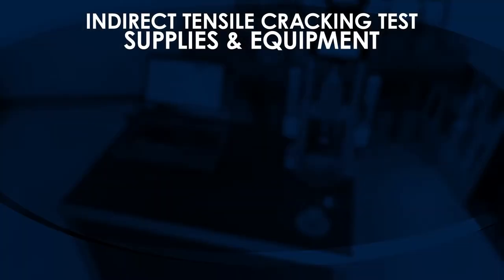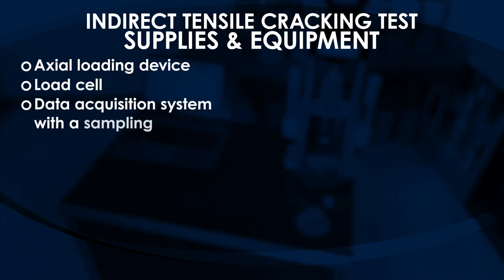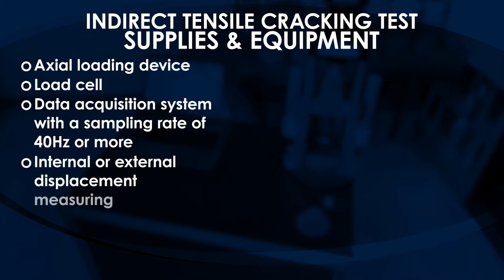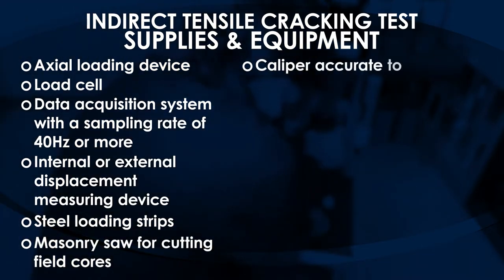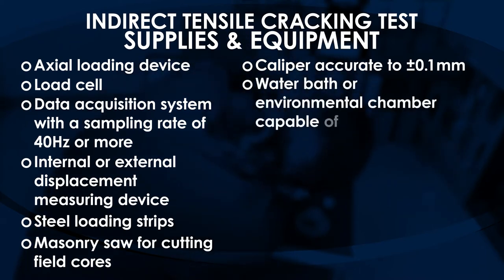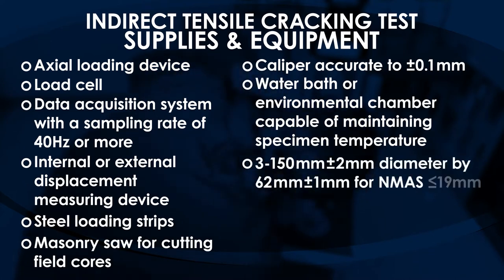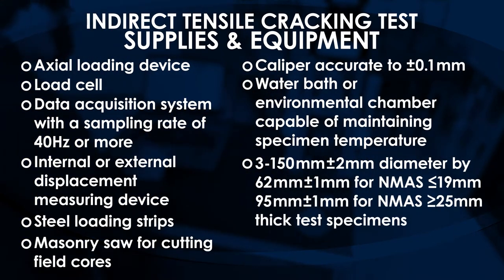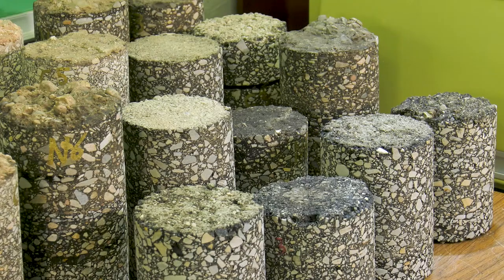Supplies and equipment needed for this test include an axial loading device, load cell, data acquisition system with a sampling rate of 40 Hz or more, internal or external displacement measuring device, steel loading strips, masonry saw for cutting field cores, a caliper accurate to 0.1 millimeter, water bath or environmental chamber capable of maintaining specimen temperature, and three 150 mm diameter by 62 mm or 95 mm thick test specimens. The ITCT test can be performed on laboratory-prepared test specimens or cores taken from the field.